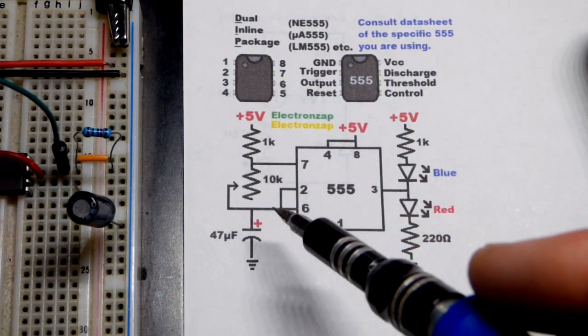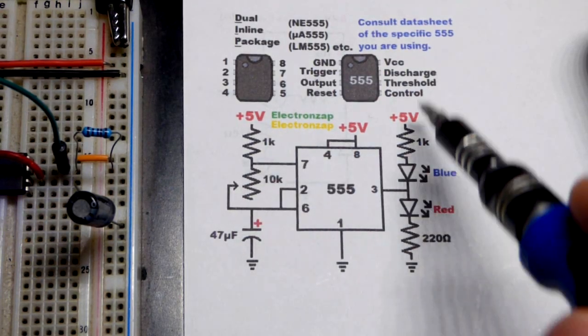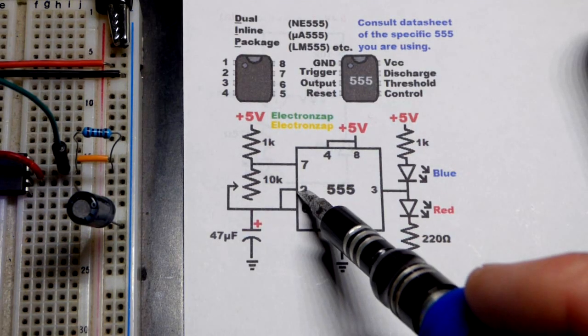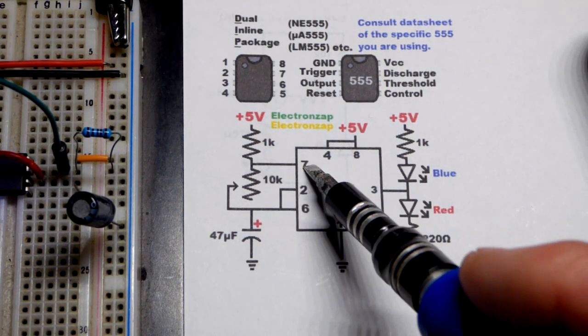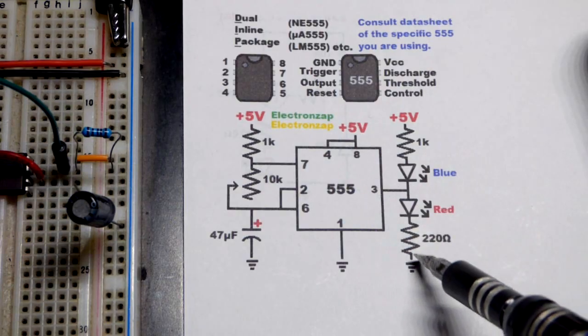So in any case it charges to two-thirds supply voltage, pin 6 senses that, starts discharging and the output goes low. Gets down to one-third supply voltage, pin 2 senses that. It stops discharging so current can flow into the capacitor again and it sets the output high.